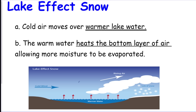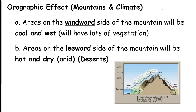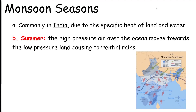Lake effect snow: cold air moves over warm lake water, which heats the bottom layer of air and adds moisture through evaporation, giving you big snowfall on the other side of the lake. On top of mountains it's cold — the orographic effect: the windward side is cool and wet with all the vegetation, and the leeward side is dry and arid, producing deserts. Monsoons, common in India, work like a giant sea breeze or land breeze.